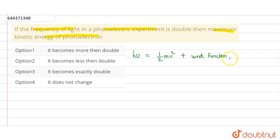So if we talk about the maximum kinetic energy, when will the kinetic energy be maximum? When the work function will be zero. So we will consider this case.